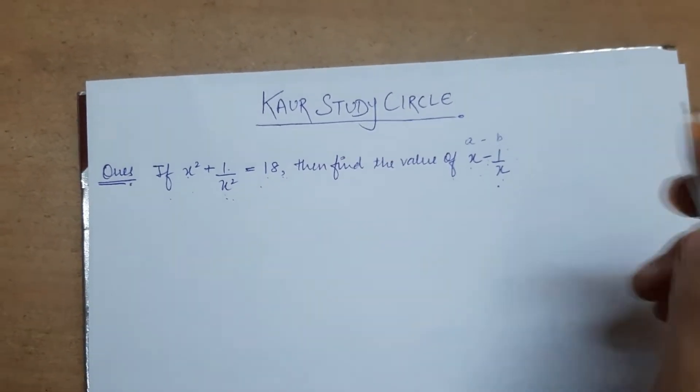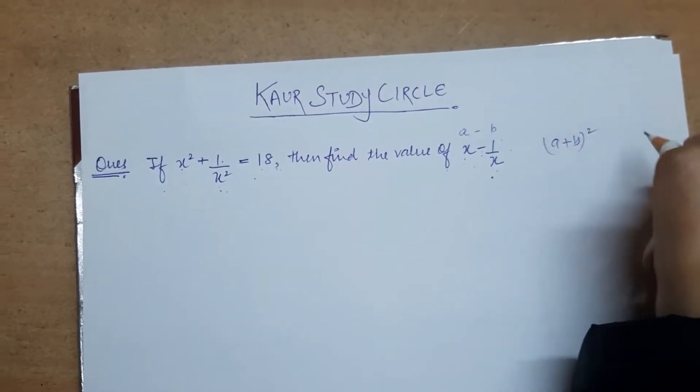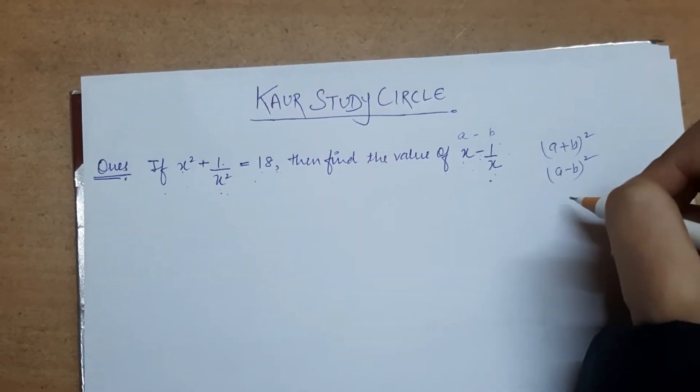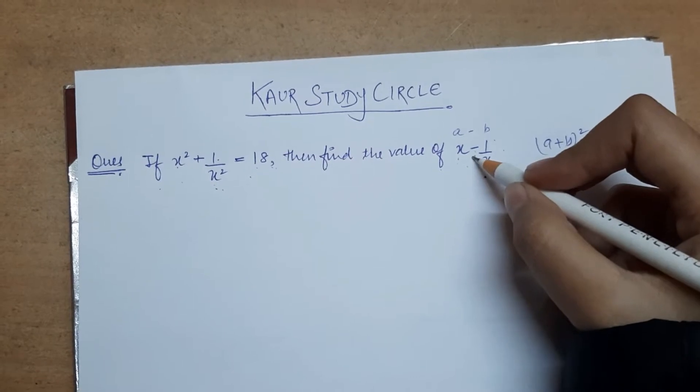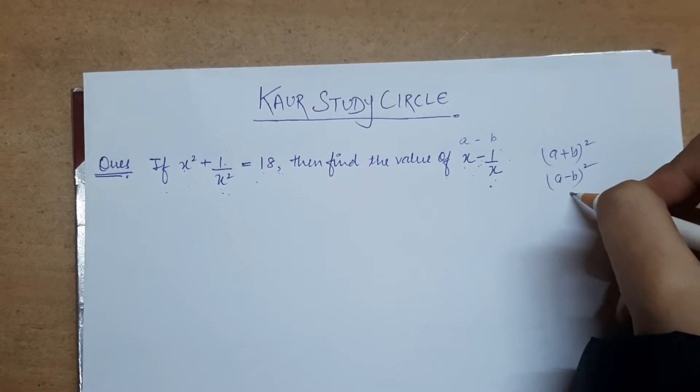We have two identities: one is a plus b whole square and one is a minus b whole square. We considered this, we saw that what we have to find has a negative sign, subtraction sign, so we will use this identity.